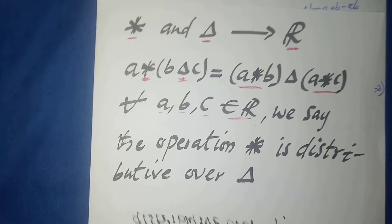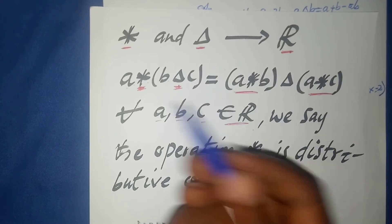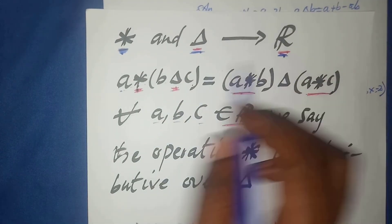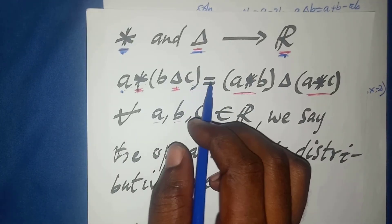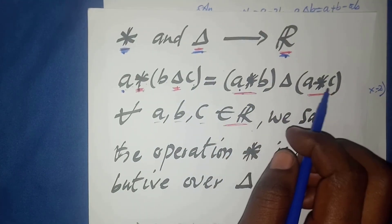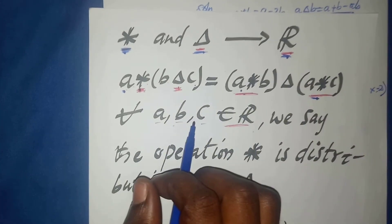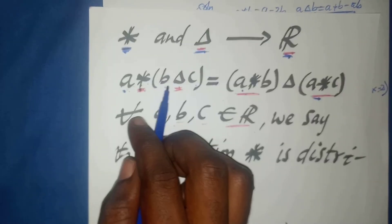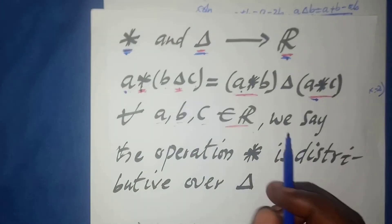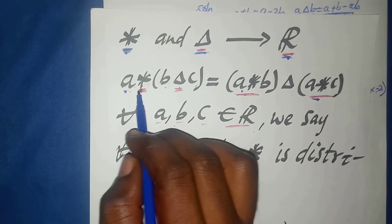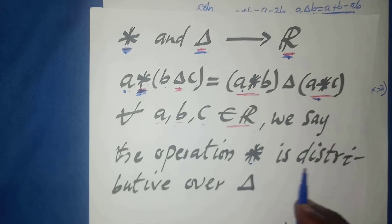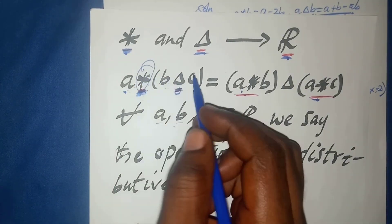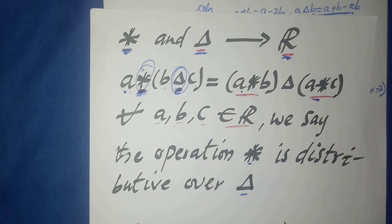In summary, we say that if two closed binary operations star and triangle are defined over the real numbers such that a star (b triangle c) equals (a star b) triangle (a star c) for all a, b, c in the set of real numbers — meaning a can be distributed between b and c to give the same values — then the operation star is distributive over the operation triangle. Thanks for watching.